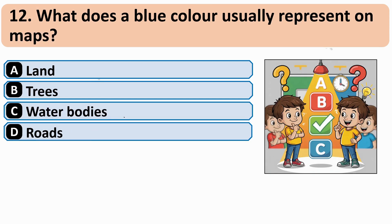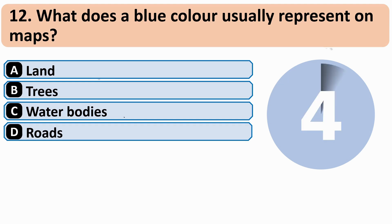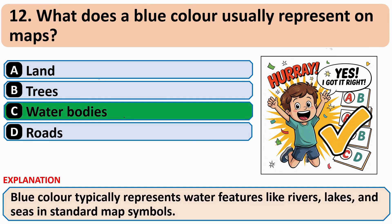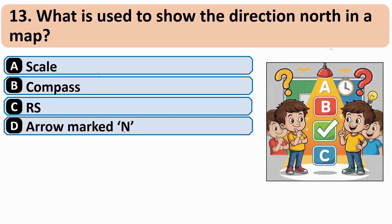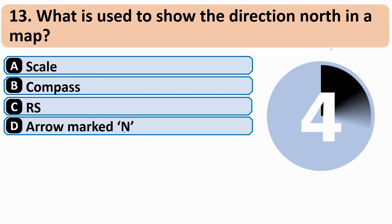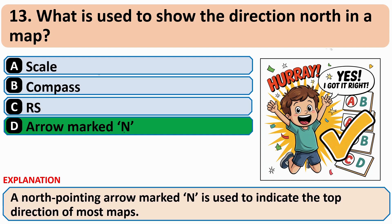What does the blue color usually represent on a map? The correct answer is C — water bodies. What is used to show the direction north on a map? The correct answer is D — an arrow marked N.